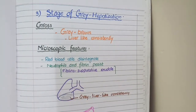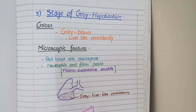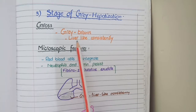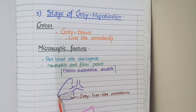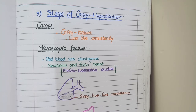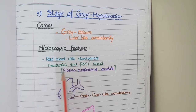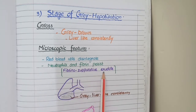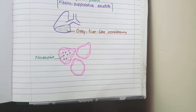The next stage of lobar pneumonia is called the stage of grey hepatization. In this stage, the affected lobe becomes grey colored because the red blood cells are degenerated by this time, so it becomes grey instead of red. But as the edema fluid is still present, there is still liver-like consistency, so we call it hepatization. You can see in this diagram that one lobe of the lung has become grey. For microscopic features, since red blood cells have disintegrated, the only thing you see in the alveoli is fibrin and neutrophils — this is called fibrinopurulent exudate.